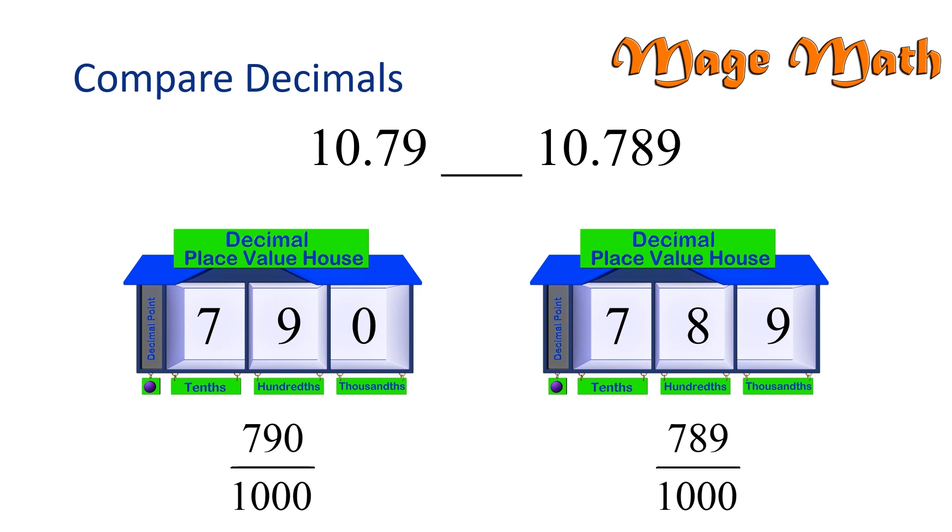Look at the numerators. Which one is larger? The fraction with the larger numerator means that that fraction has more parts to the whole. Since 790 is more than 789, the fraction 790 thousandths is greater than 789 thousandths. Or we can say 0.790 is greater than 0.789. We can go back to our original problem and write the greater than symbol between the two decimal numbers.